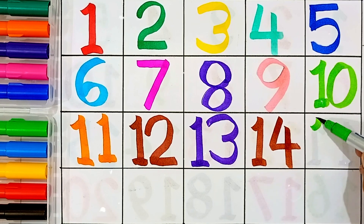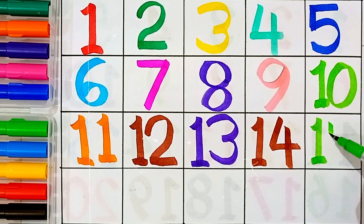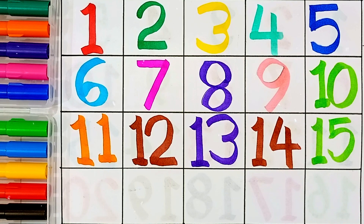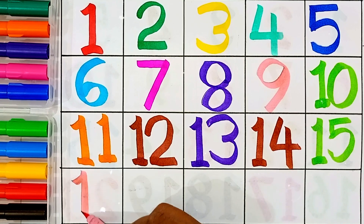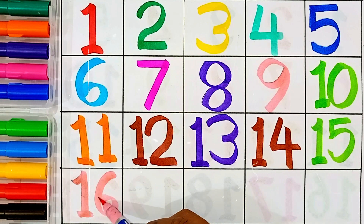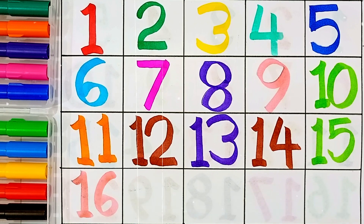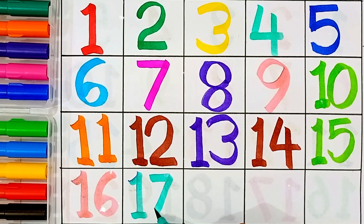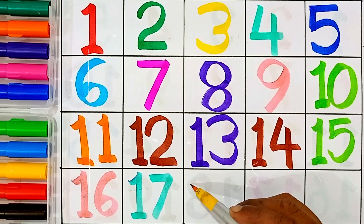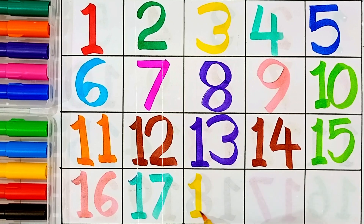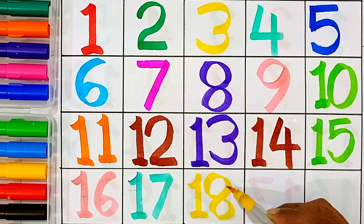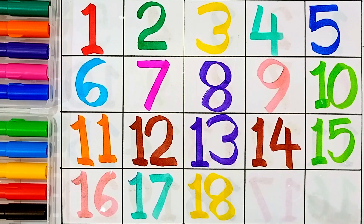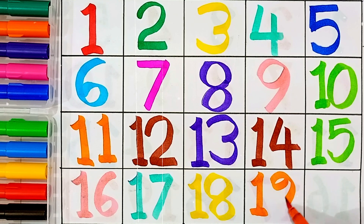15 — 1 and 5, this number name is 15. 16 — 1 and 6, this number name is 16. 17 — 1 and 7, this number name is 17. 18 — this number name is 18. 19 — 1 and 9, this number name is 19.